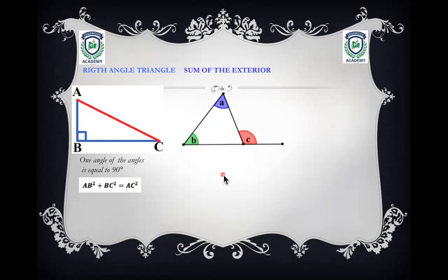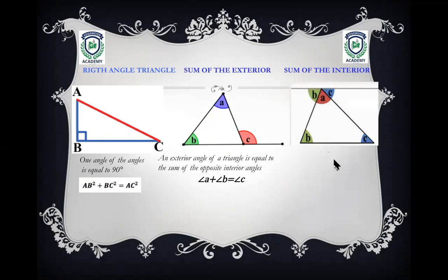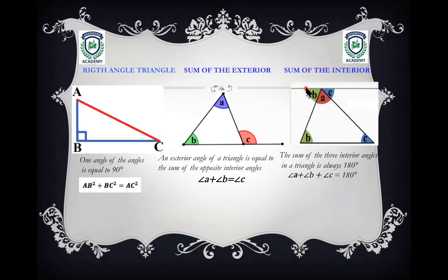The exterior angle of a triangle is equal to the sum of the interior opposite angles — for example, angle A plus angle B equals angle C. The sum of the interior angles: angle A + angle B + angle C = 180 degrees, which also aligns with what we covered about angles on a straight line.